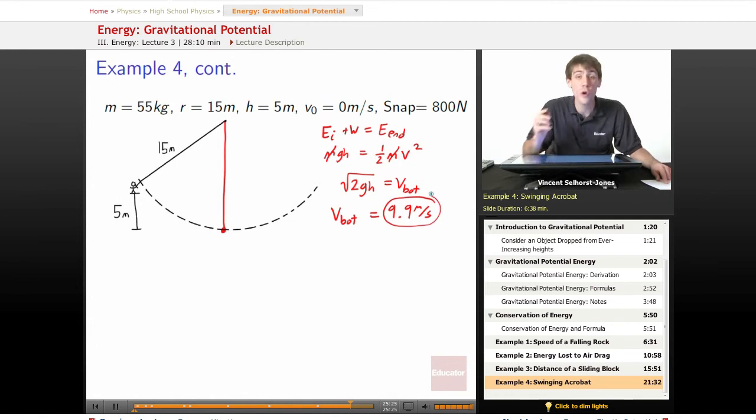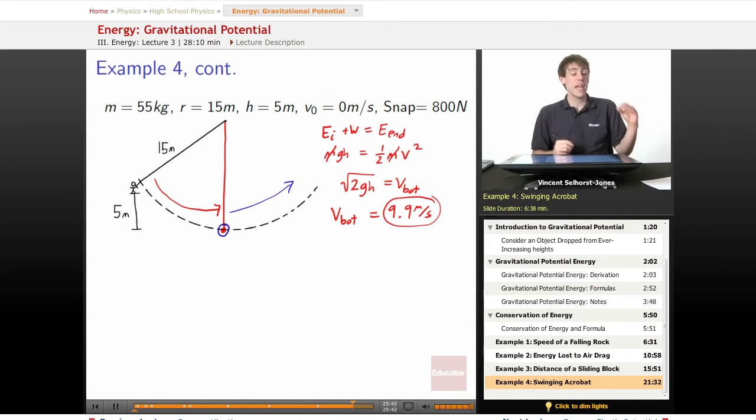That's how fast our acrobat would be traveling if the rope were definitely safe. If the rope snaps, it will snap somewhere between here and here. After this, it winds up being safe. So all we have to do is test the most extreme point, and we'll be able to figure out if it snaps before it gets to the bottom. If the bottom tension is greater than 800 newtons, we know the rope snaps somewhere on the way to getting to the most extreme tension.